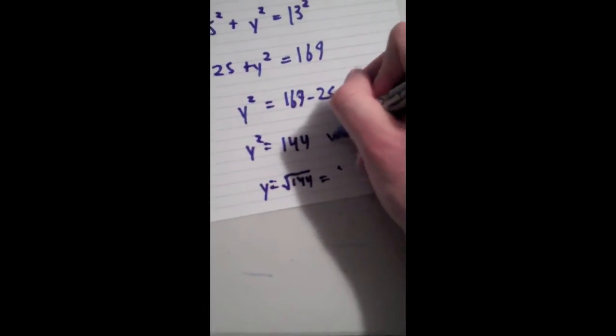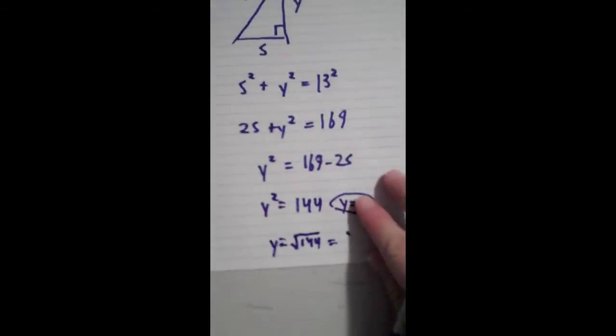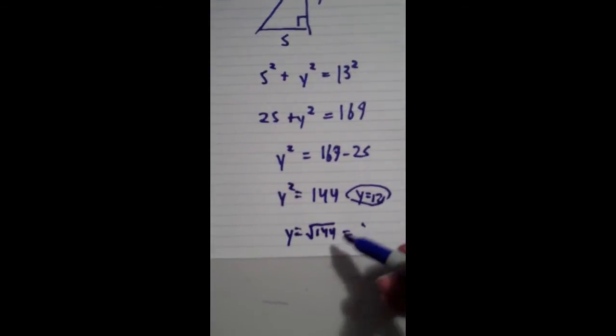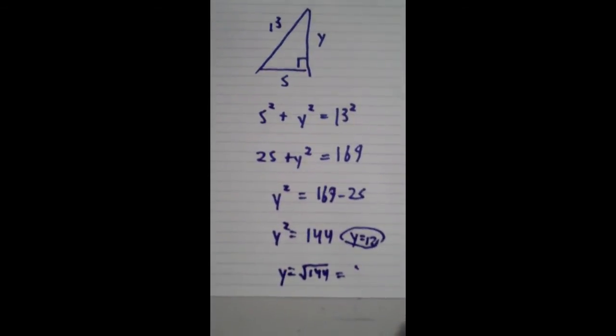Also, I encourage my students to do that because then it's easier to get partial credit when you mix something up because your teacher can follow what you did. Okay, so y is the square root of 144, which is 12. So y is 12.